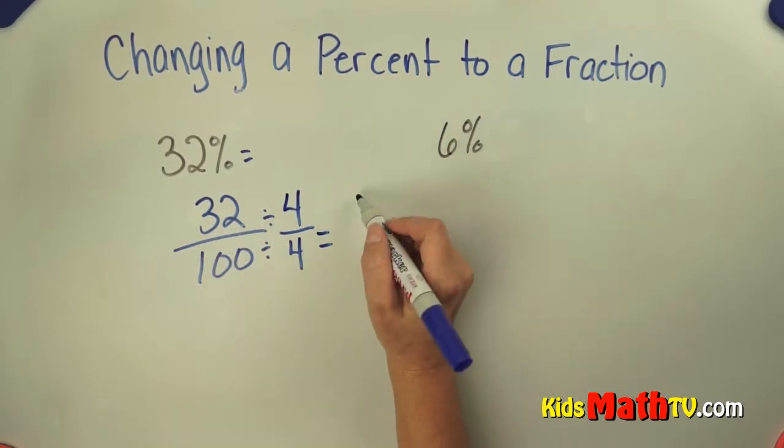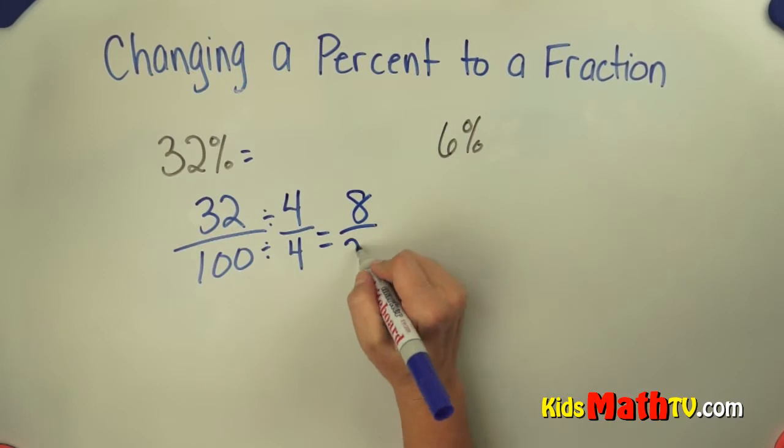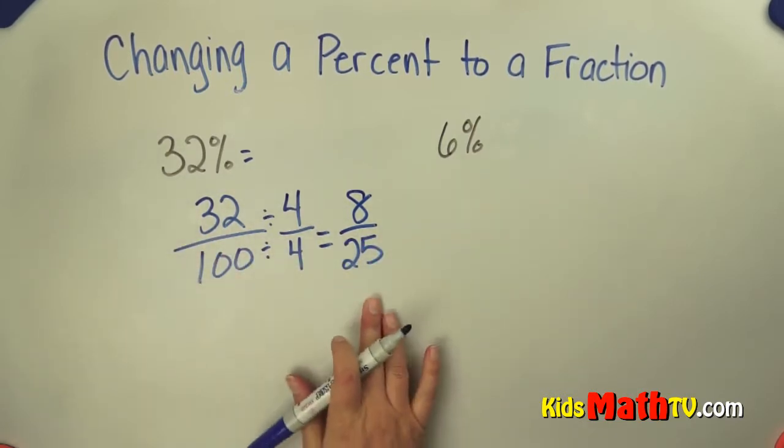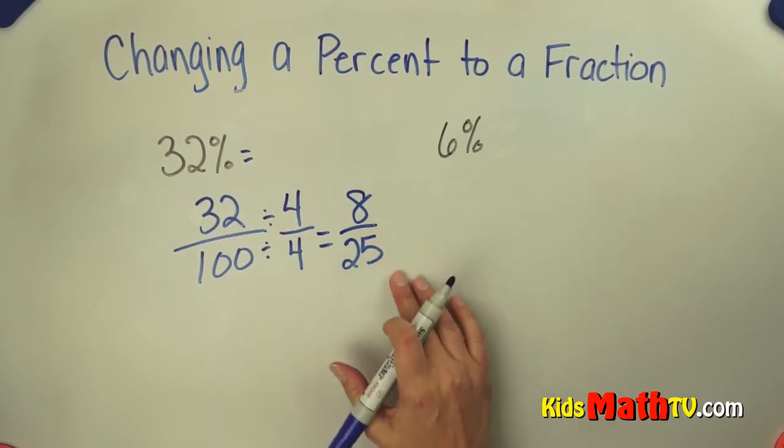32 divided by 4 is 8. And 100 divided by 4 is 25. So 32% as a fraction simplified is 8 25ths.